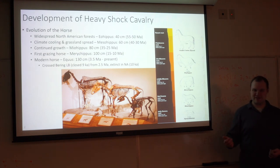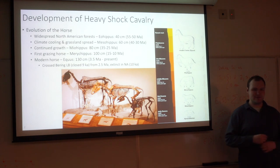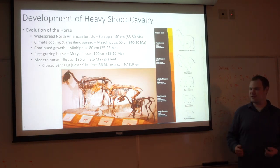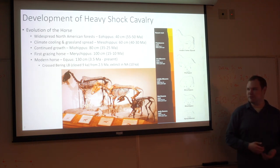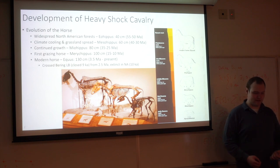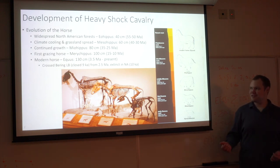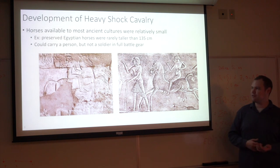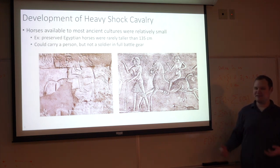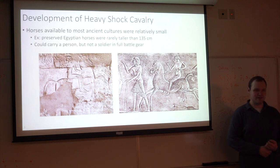These horses crossed the Bering Land Bridge around 9,000 BC, and then the Bering Land Bridge was no longer there after the Ice Age ended. Very shortly after, the horses went extinct in North America, but they spread through Eurasia fairly quickly. At the final step of this natural evolutionary process, you have a horse which is only about a meter and a half in height and not particularly strong. So the horses available to early cultures could carry a person, but couldn't carry a rider in heavy battle gear with heavy armor and weaponry.